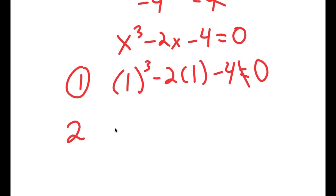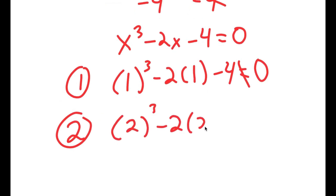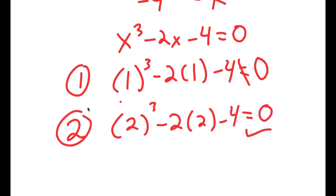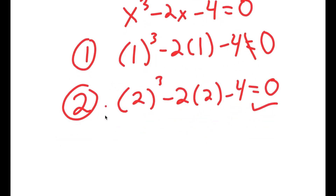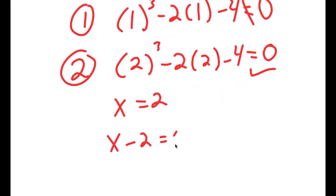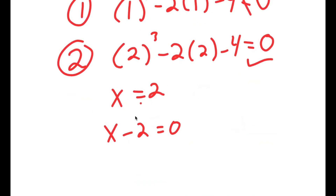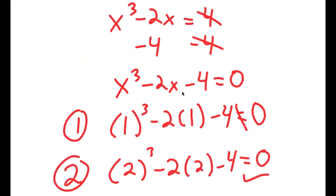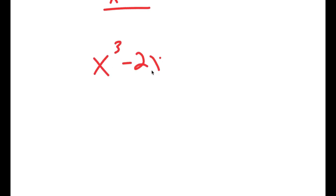If x equals 2, I get 2 to the power of 3 minus 2 times 2 minus 4. 2 to the power of 3 is 8; 8 minus 4 is 4; and 4 minus 4 is 0. So this does equal 0, meaning x equals 2 is a solution — so x minus 2 equals 0. Now we're going to divide x minus 2 into x to the power of 3 minus 2x minus 4.